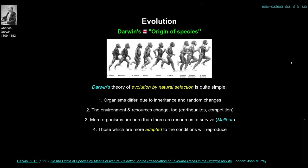The third thing he noticed was that there are more organisms born than are able to survive — there aren't enough resources to support all of these animals all the time. This is an idea that comes from Malthus on population.